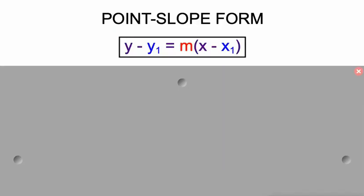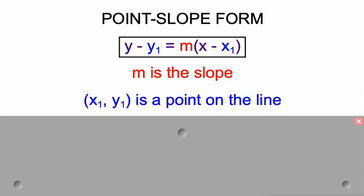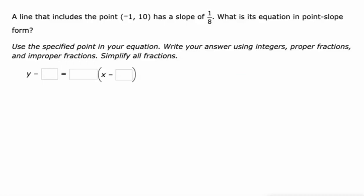So here we go, we got point-slope form is y minus y sub 1 equals m times x minus x sub 1, where m is the slope and x sub 1, y sub 1 is any point on the line. Those are going to be values that we plug in and that's what we're going to be given every single time in this lesson.